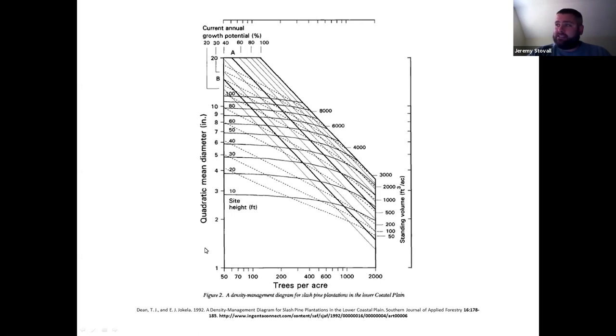All that we're using today are the two axes with quadratic mean diameter on the y-axis and trees per acre on the x-axis, and then we're using the lines that are parallel to this upper right edge of the graph. You can see that's phrased as current annual growth potential in percentage, and so 100% is max SDI. So that is essentially a relative density in the same respect that we've been calculating. Relative density is SDI divided by max SDI. You can disregard everything else on here for our purposes today.